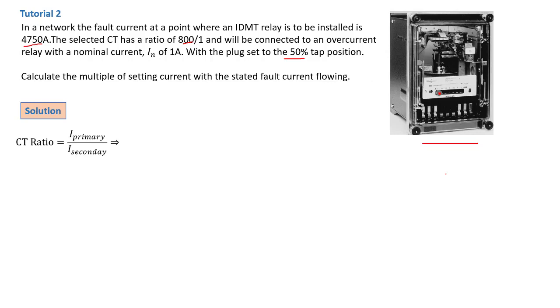We know that the CT ratio is I primary over I secondary, and we do the permutation to find our I secondary. We already talked about the issue of the primary current if it's not given. That means it's now, in this case, a fault current. In a normal working operation of the circuit, you're going to have a current flowing maybe of 2 amps or 2 kiloamps, but in case of a short circuit, there's going to be 4750 amps.